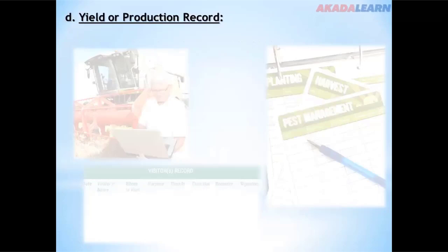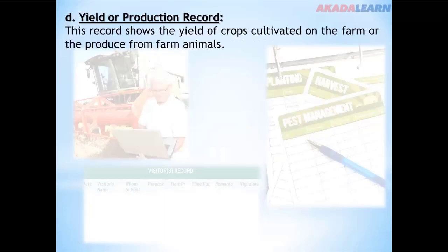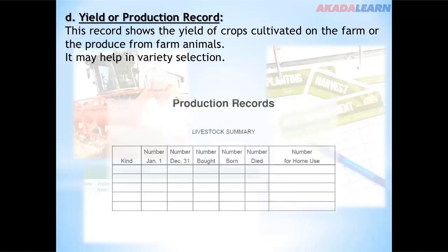Yield or production records: this record shows the yield of crops cultivated on the farm or the produce from farm animals. It may also help in variety selection.